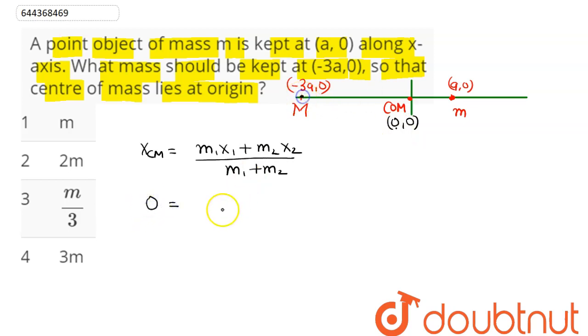M₁ mass is capital M, which we need to find out. Here, x₁ is -3a and m₂ mass here is small m and x₂ here is a divided by M plus m.